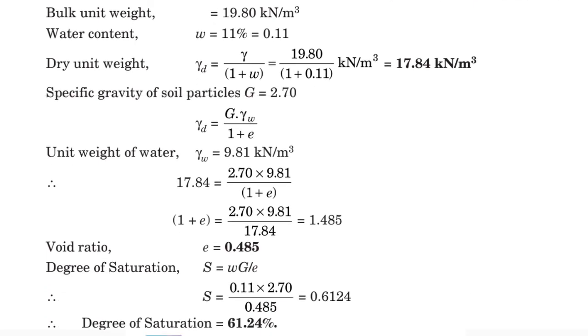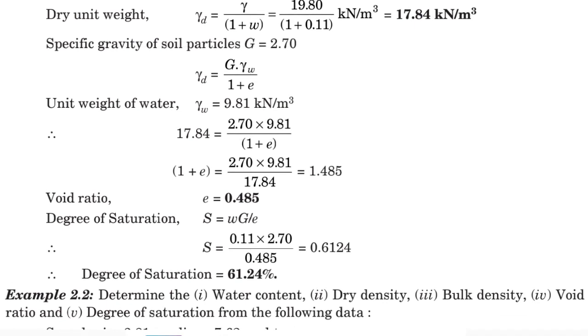After that, we are going to find the degree of saturation. The degree of saturation formula is e times S equals w times G. From that relation, we can get S equals w times G divided by e.